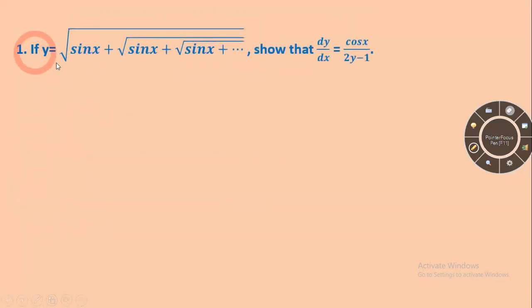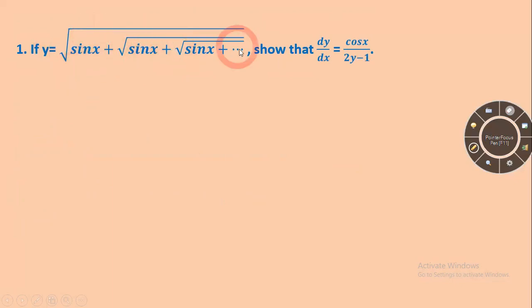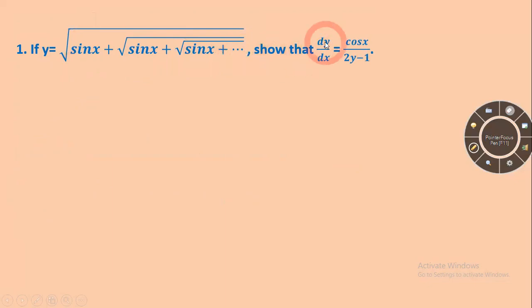For example, if y equals square root of sin x plus square root of sin x plus square root of sin x, and so on up to infinity, then by our formula dy/dx will be equal to cos x upon (2y minus 1).